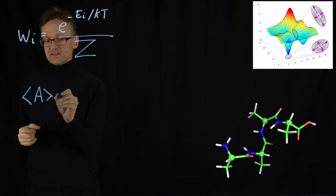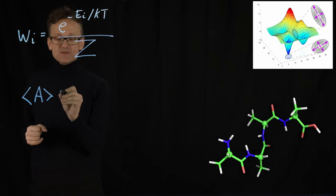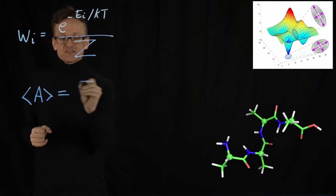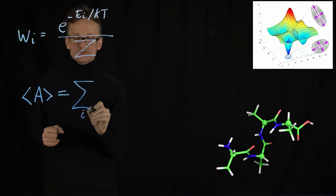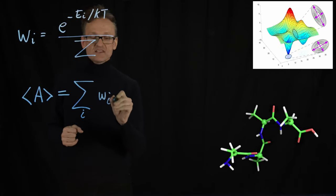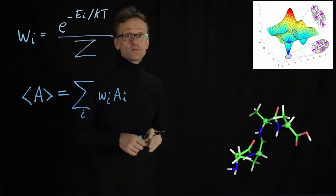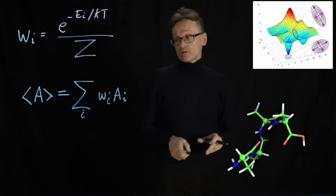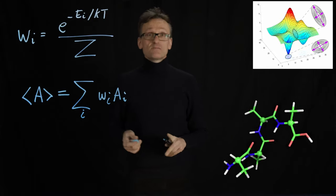And the power of that is if I know that, I can calculate the average value of a property A. I'll get back to what those brackets mean, as the sum over all states, the weight in each state multiplied by the value the property had in that state. But if I can't do that sum, I can't apply that.